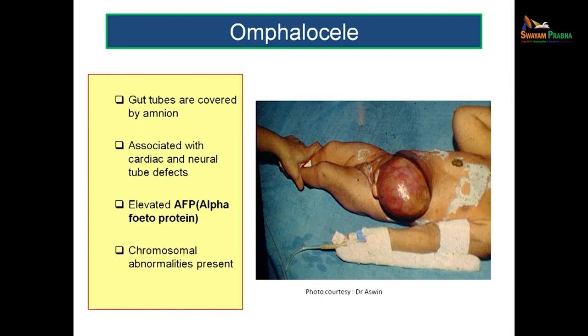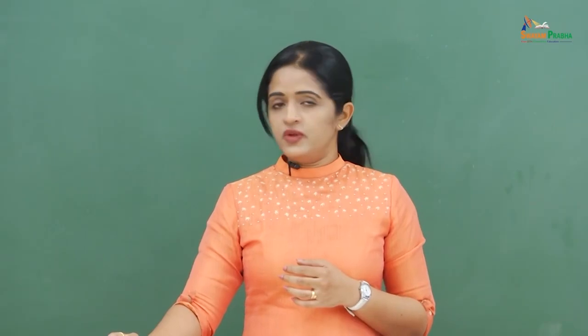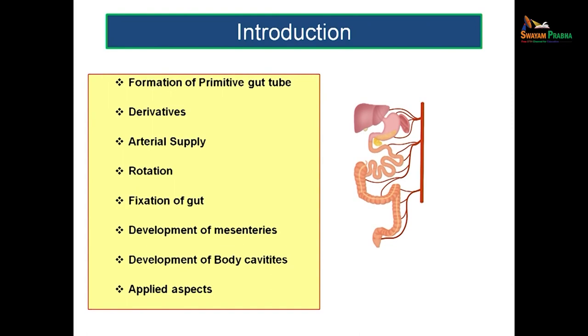In this condition you will also get elevated alpha-fetoprotein levels. These conditions can be prenatally diagnosed because these children will always be suffering from chromosomal abnormalities as well. So if diagnosed early, you can intervene early. In this session, we will be dealing with the formation of the primitive gut tube, the derivatives of the gut tubes, the arterial supply, how the rotation happens, how the organs come to the adult position, the fixation of the gut, the development of mesenteries, the development of body cavities, and a little bit of applied aspect.